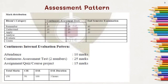The assessment pattern of this course is given here. There will be two continuous assessment tests of 50 marks each and an end semester examination of 100 marks. The continuous internal evaluation pattern: attendance carries 10 marks; the two continuous assessment tests of 50 each will be averaged to 25; and the assignment, quiz, and course project carries 15 marks. So altogether, CIE carries 50 marks. The end semester examination carries 100 marks, and the total mark is 150.